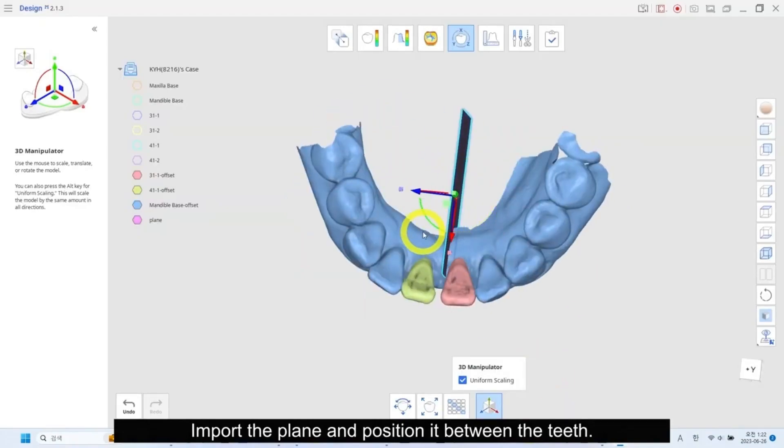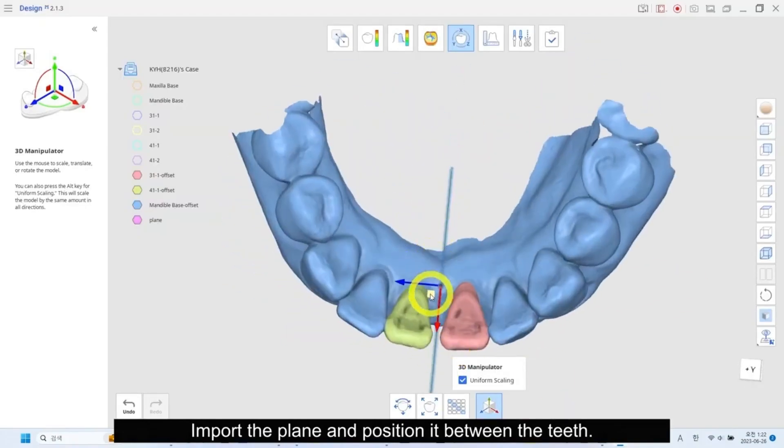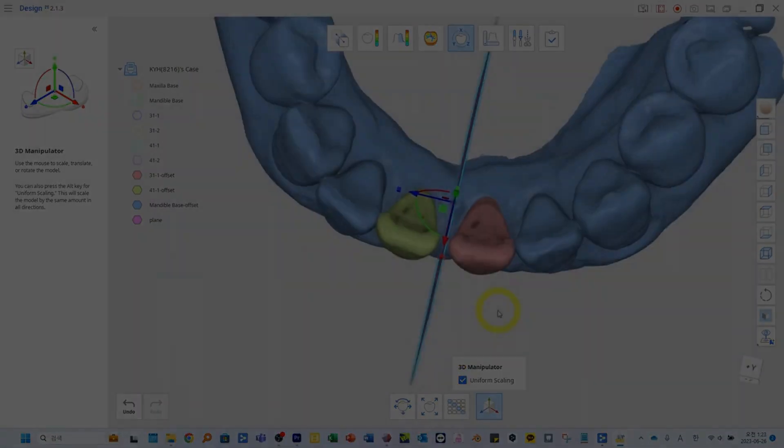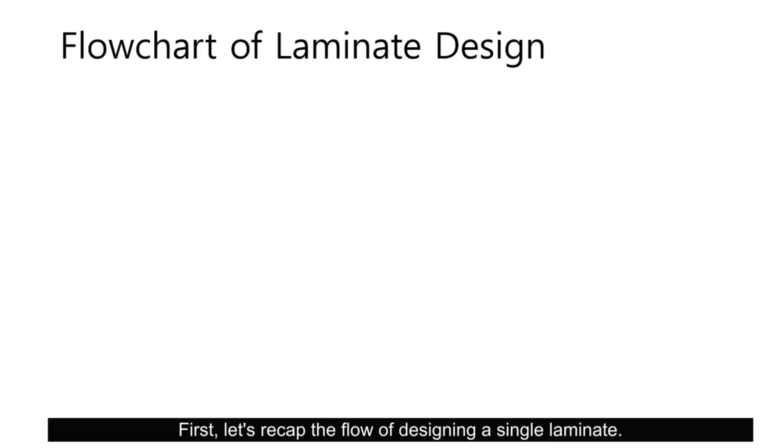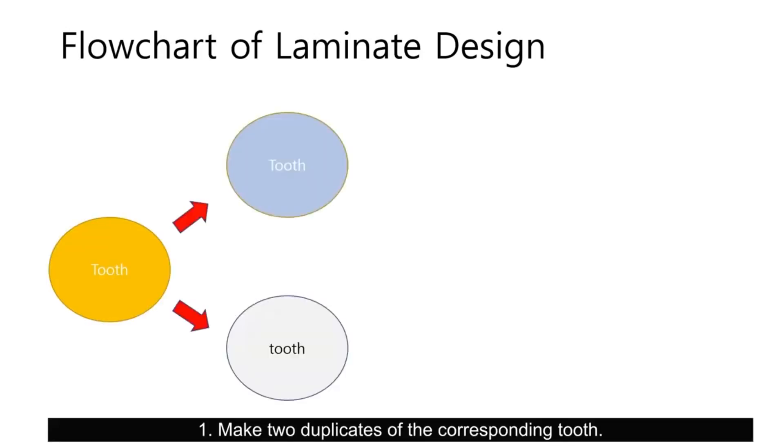Import the plane and position between the teeth. First, let's recap the flow of designing a single laminate. Make two duplicates of the corresponding tools.